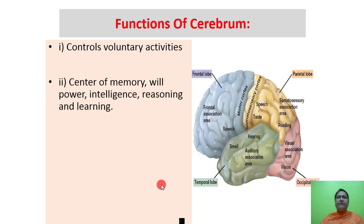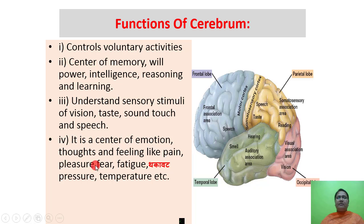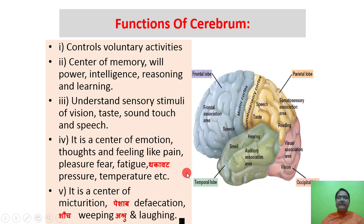Functions of the cerebrum: it controls voluntary activities and is the center of memory, willpower, intelligence, reasoning, learning, and understanding. It receives sensory stimuli of vision, taste, sound, touch and speech. It is also the center of emotions, thoughts and feelings like pain, pleasure, fear, fatigue, pressure, temperature, and controls micturition, defecation, weeping and laughing.